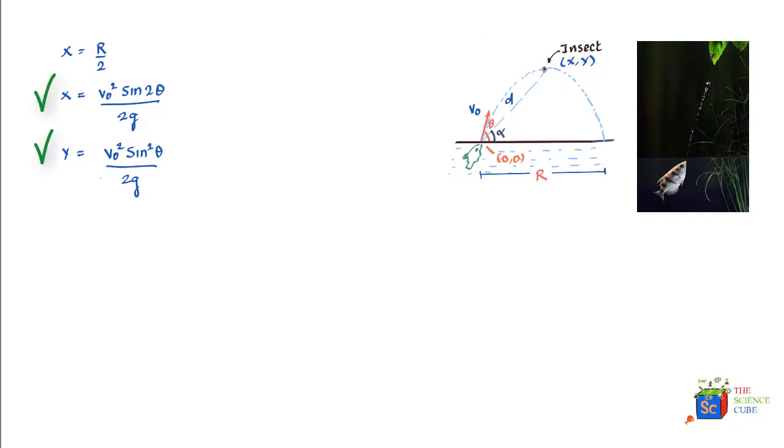So now once we know x and y, the problem becomes pretty simple. Now we have tan of alpha equal to opposite side upon base. Here the opposite side is the maximum height, which is y, and the base would be x. If you simplify this, what you'll find is that tan alpha is equal to half tan of theta, which gives theta is equal to tan inverse of 2 times tan alpha.